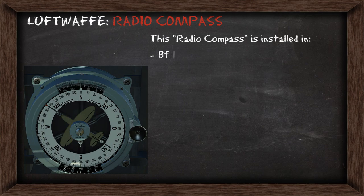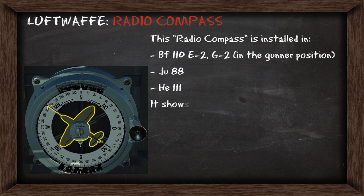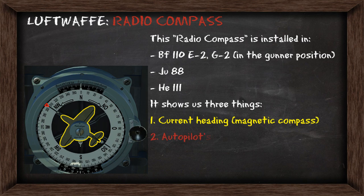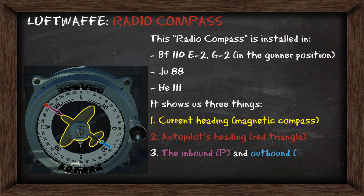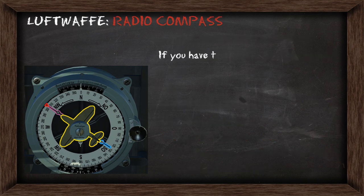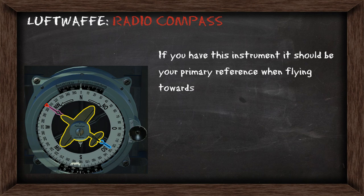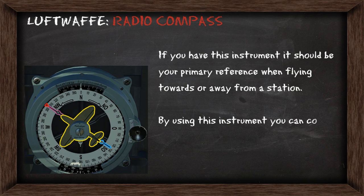The radio compass is installed in the BF110 E2 and G2 in the gunner's position, the Junkers 88, and the Heinkel 111. It shows us three things: the current heading in yellow, which is your magnetic compass; a red triangle for the autopilot's heading; and your inbound and outbound courses from the station in purple and blue. If you have this instrument in your airplane, it should always be your primary reference when flying towards or away from a station, because it allows you to correct for wind and fly a straight course to the station instead of a curved path.